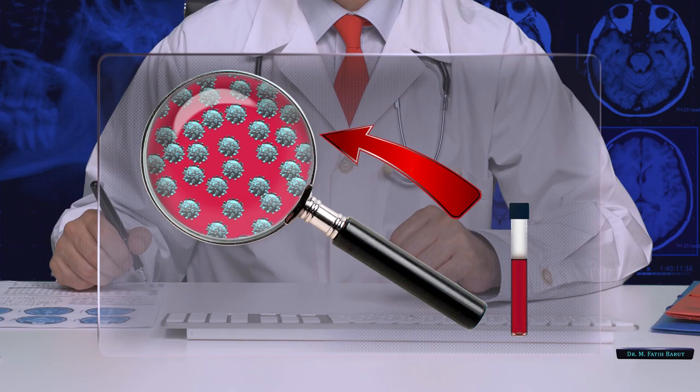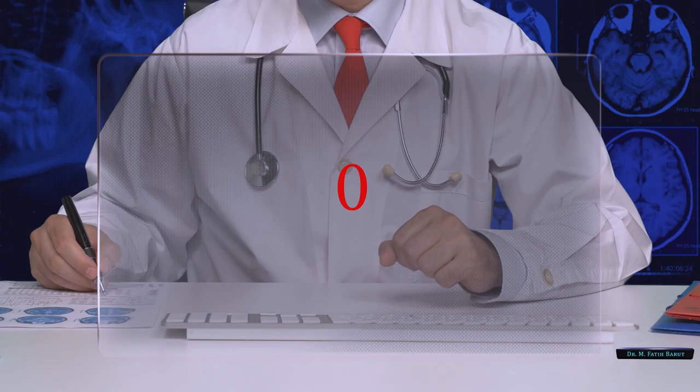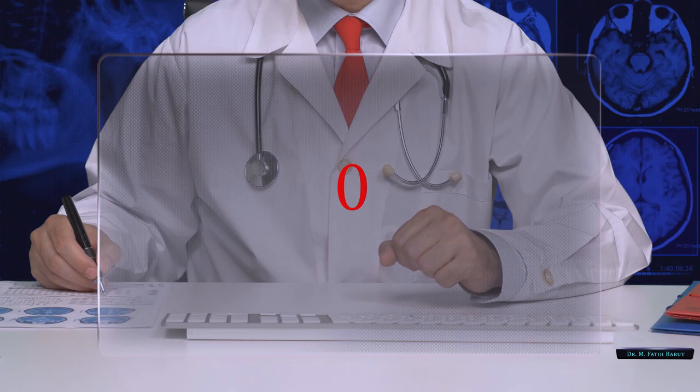Now, we have billions of inactivated virus that has the ability to awaken the immune system but no ability to produce illness anymore. Count the alive virus particles again. Since we killed all of them, it should be zero now. Now, clarify, filtrate it and make dosage adjustment.